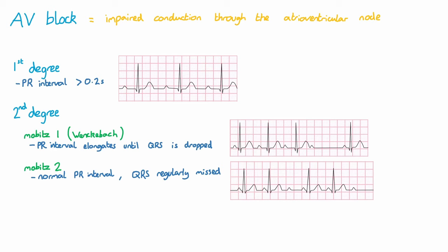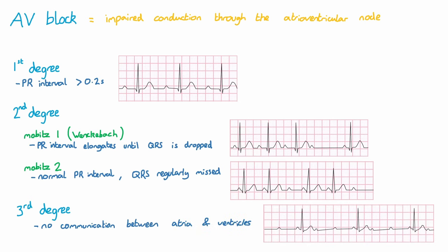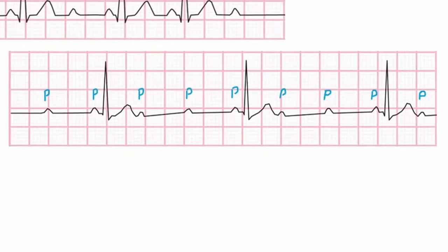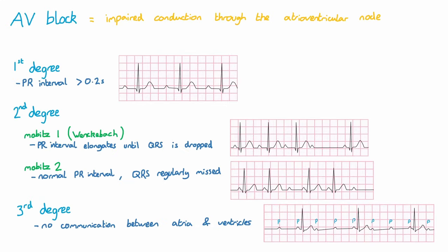Mobitz 2 can cause haemodynamic instability and lead to third degree AV block. In third degree AV block, there is no communication between the atria and ventricles, so each is producing their own waves of depolarisation which are out of sync with one another. This can lead to sudden cardiac death, so requires pacing.